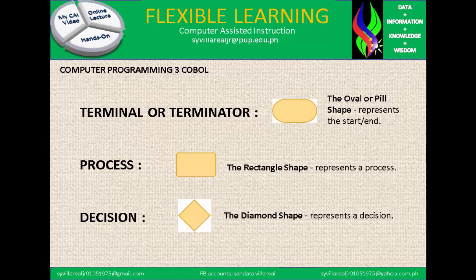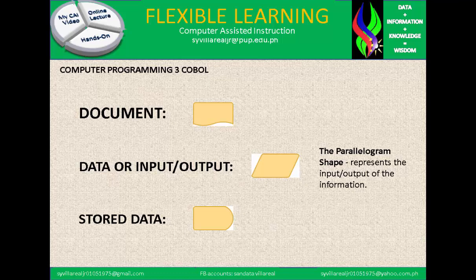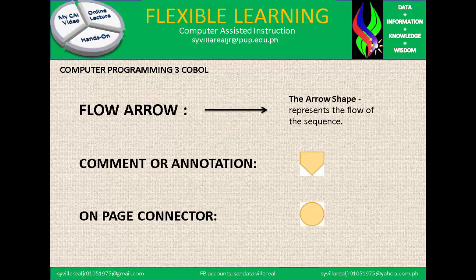Terminal or terminator uses the oval or pill shape and represents the start and end. Process uses the rectangle shape. Decision uses the diamond shape. Data or input-output uses the parallelogram shape to represent input and output of information. Stored data can be modified in shape. The flow arrow uses an arrow shape to represent the direction and flow of the sequence.